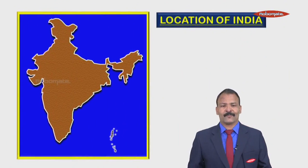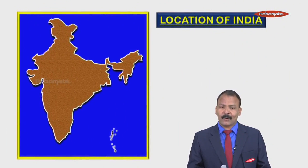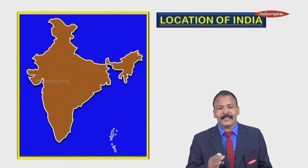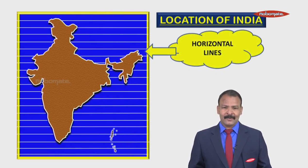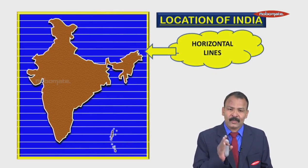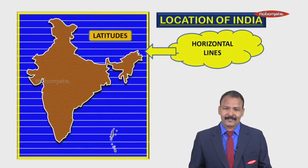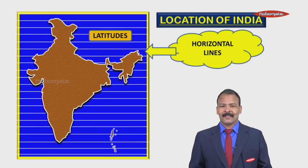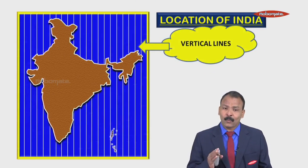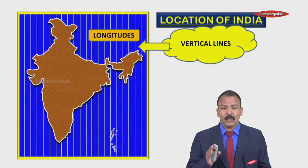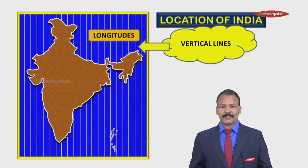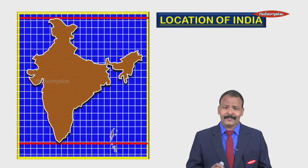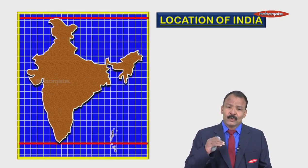Whenever we talk about the location of any country, we have to understand certain lines. The first ones are horizontal lines known as latitudes. Then there are vertical lines named as longitudes. These are used for understanding location because all countries lie between two latitudes and similarly between two longitudes.